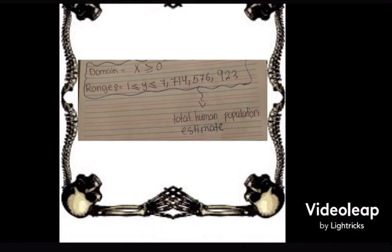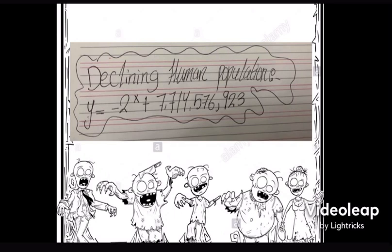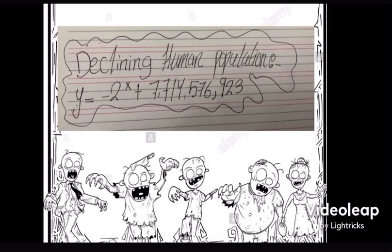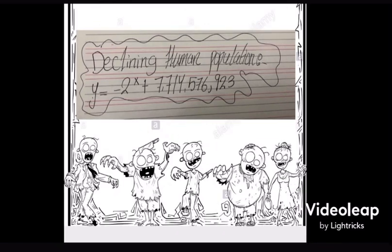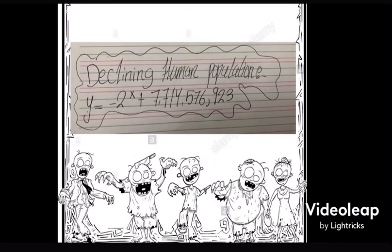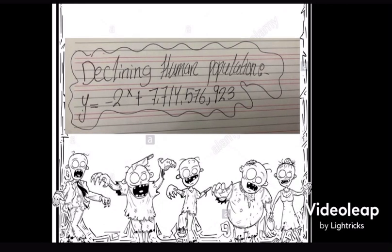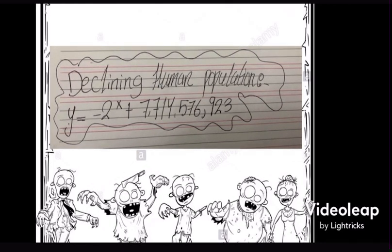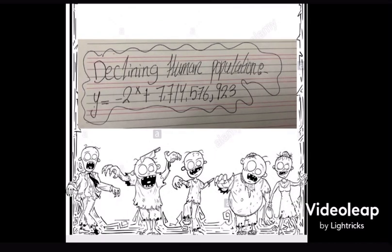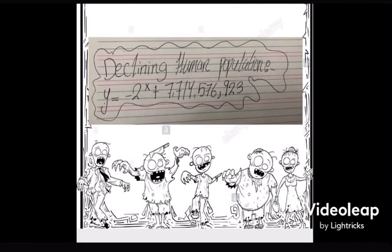And now, using this zombie equation, you can calculate the declining human population using the exponential function, which is y = -2^x + 7,714,576,923.